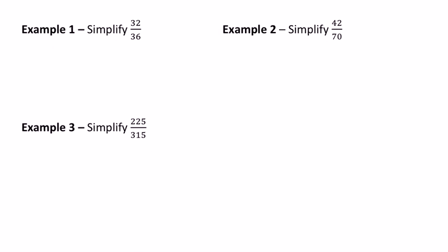Here are some examples. The first one, 32 over 36. Your fastest way is to find the greatest common factor of the numerator and denominator. But if you don't know those off the top of your head, look for things you do know. For instance,